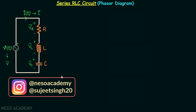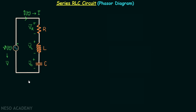We can see that different types of elements are connected in series combination, and therefore the net voltage will be the phasor sum. This means V phasor will be equal to VR phasor plus VL phasor plus VC phasor.